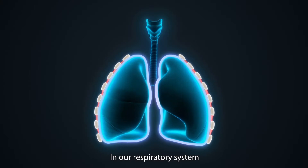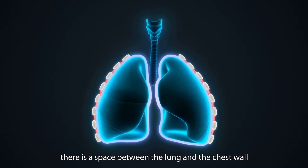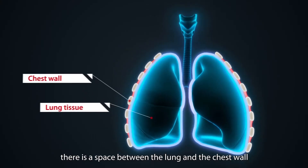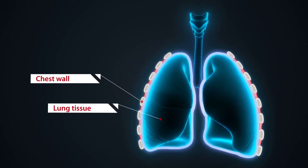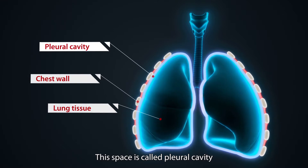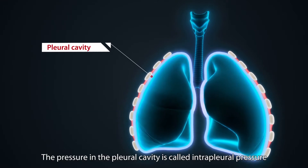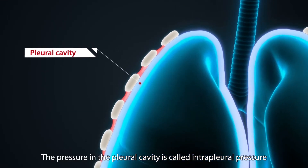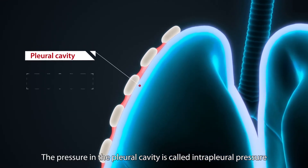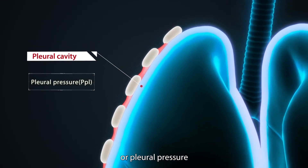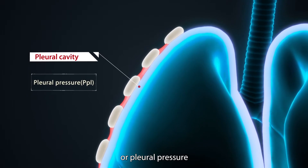In our respiratory system, there is a space between the lung and the chest wall. This space is called the pleural cavity. The pressure in the pleural cavity is called interpleural pressure, or pleural pressure.